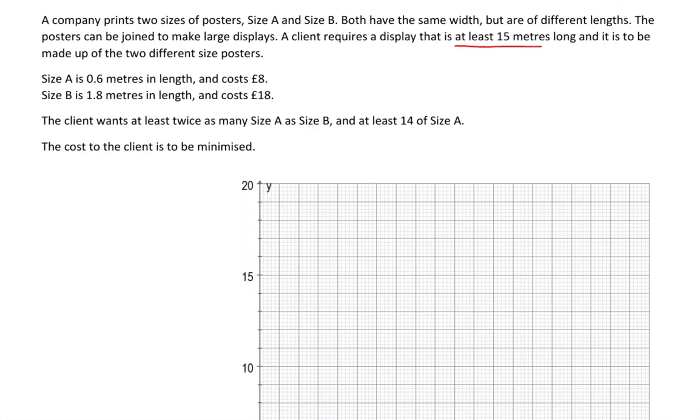The client wants at least twice as many size A as size B and at least 14 of size A. The cost to the client is to be minimized.